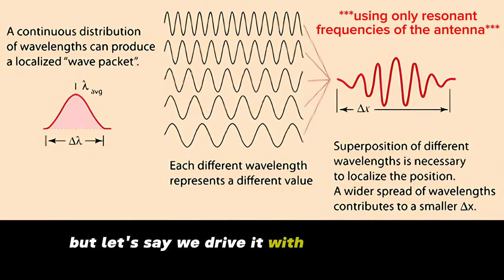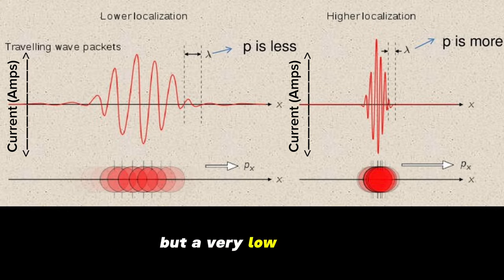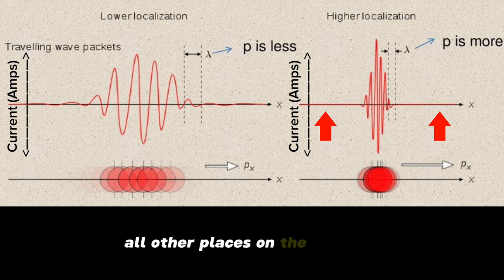But let's say we drive it with many different resonant frequencies, so that when they add together, they make a wave of extreme intense current in a localized tight spot, but a very low current all other places on the antenna.